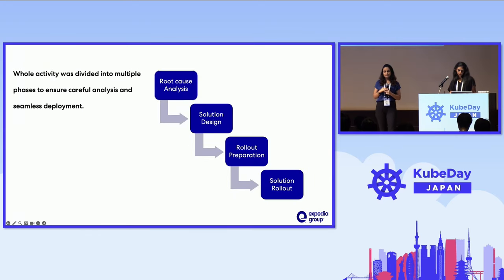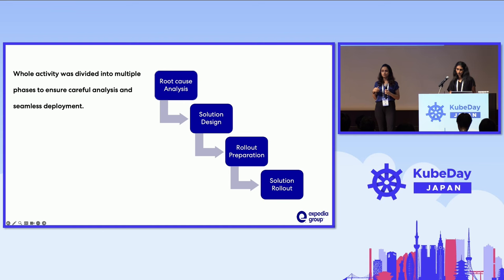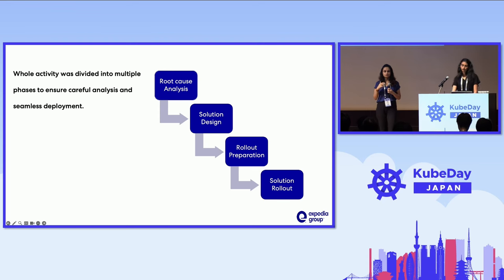The whole activity was divided into multiple phases to ensure careful analysis and seamless deployment. First, we did the root cause analysis — we found out what the exact issue was causing those client-side timeouts and errors. Then we finally designed the solution. After that, we prepared ourselves for the rollout and figured out all the solutions for each failure mode in the solution rollout phase. And then finally, we rolled out the solution.